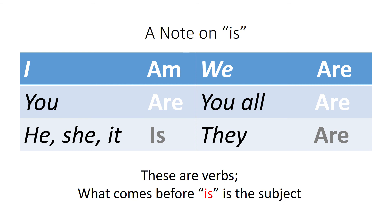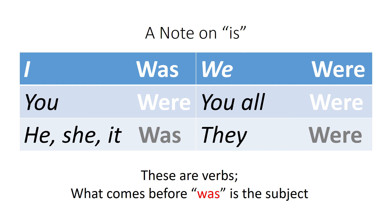Now a note on the verb 'is.' When you say he is, she is — 'is' is a verb, and so are all its forms. In the present tense: I am, he is, and you, we, and they are. Anything that comes before these verbs is the subject. The same is true for its past tense, was and were — anything that comes before these verbs is also the subject. That's how the verb 'to be' works.